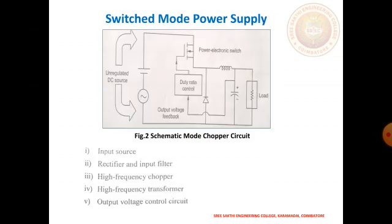Next type: switched mode power supply, that is SMPS. In SMPS, the input supply drawn from the AC mains is first rectified and filtered by using a capacitor at the rectifier output. The unregulated DC voltage across the capacitor is then fed to a high frequency DC-to-DC converter, converting an unregulated DC input voltage to a regulated DC output voltage. The ratio can be determined by varying the duty cycle. Some advantages are very low power losses and high efficiency, up to 95%.